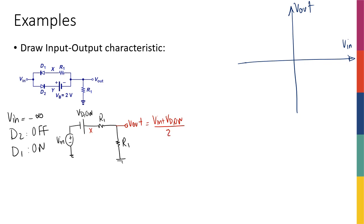Starting from negative infinity I have a line with a slope of one-half that crosses the X-axis at V_D_on divided by two. So if this is V_D_on / 2 on the output axis and the slope is 1/2, I have a line like this.